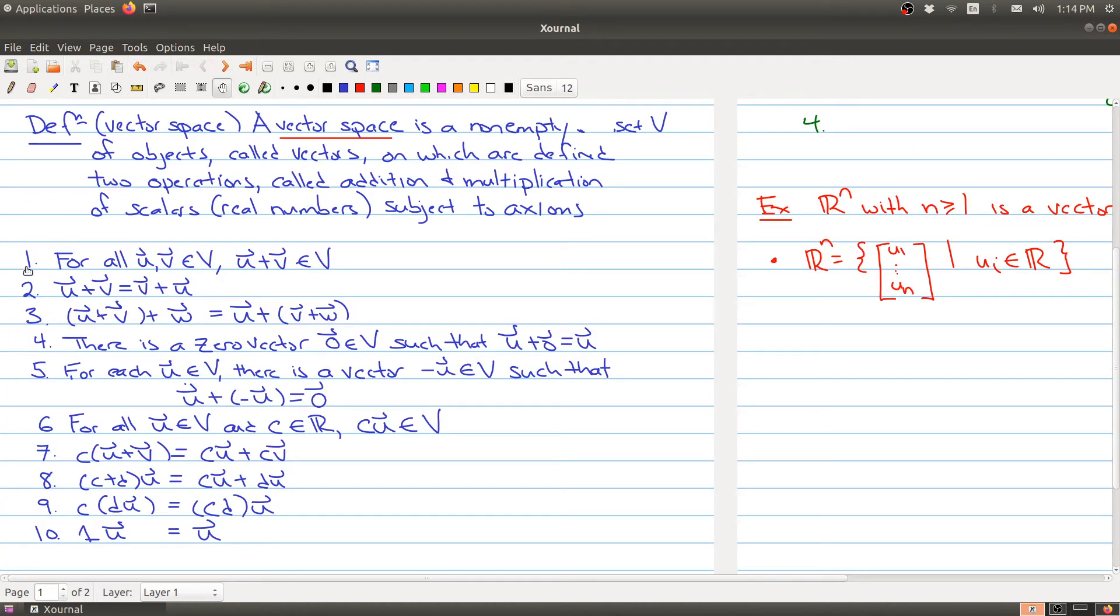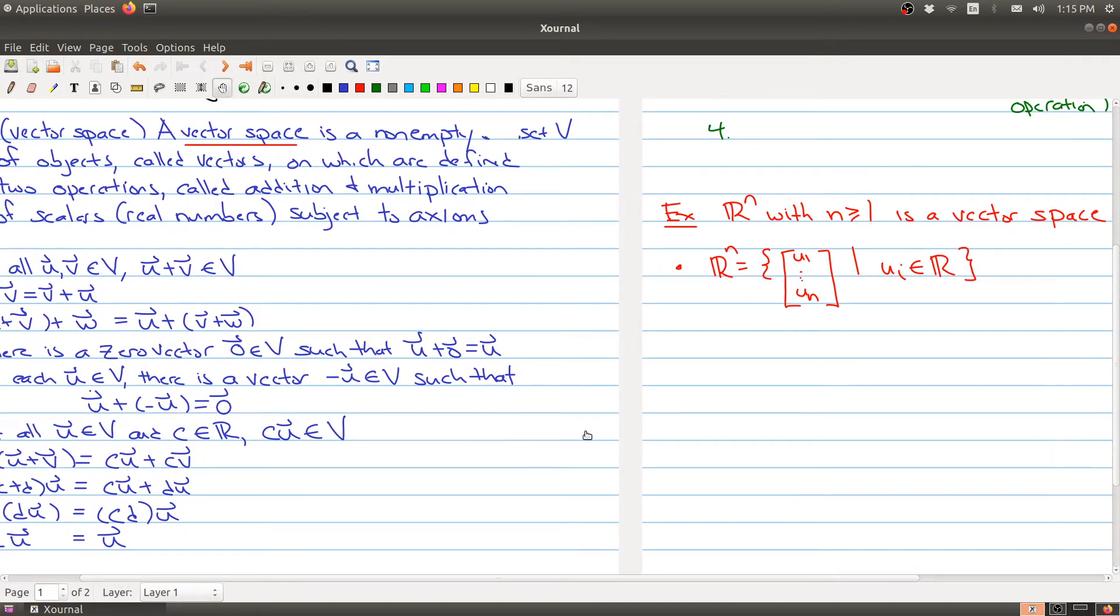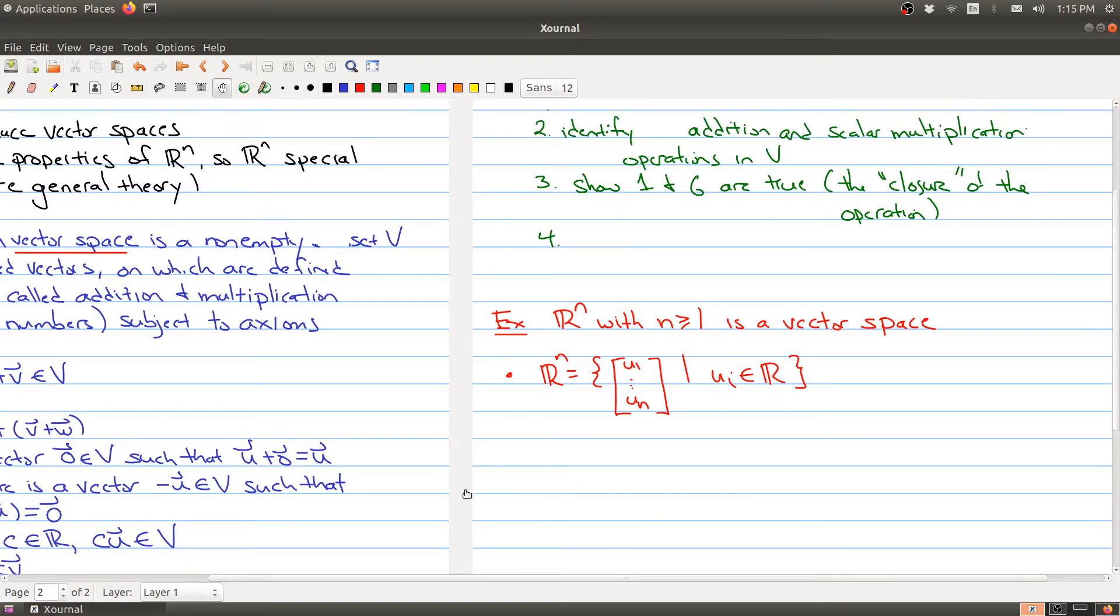So one is right here and six is right here. And the first statement is saying that your operation has the property that if you take two vectors and apply the operation, you get back in the set. Similarly, if you take a vector u and you take a constant c and you do the scalar multiplication, you get something back in your set. So you want to first make sure that that's true.